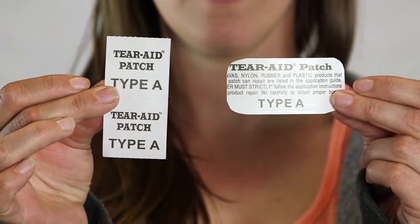Tear Aid comes in a variety of pre-cut sizes. We recommend having an assortment of these in your field repair kit for different size tears.